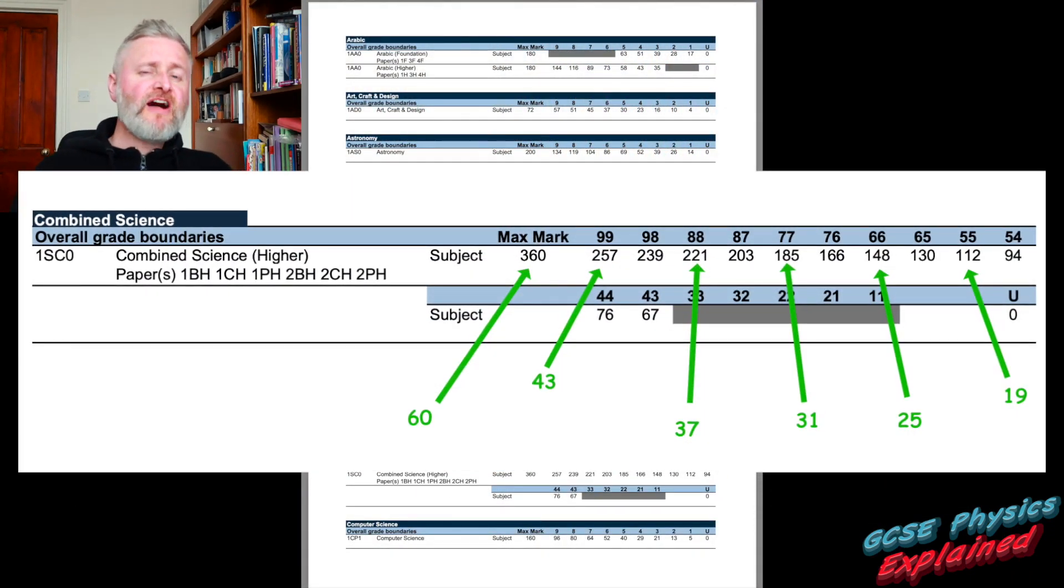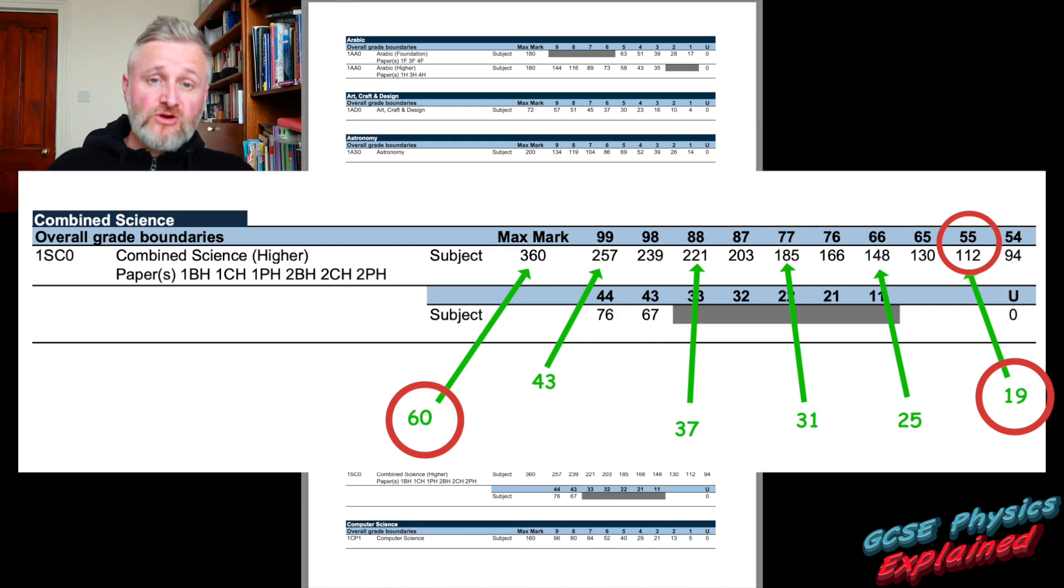On the combined science higher papers, you only need an average of about 19 marks per paper out of 60 to get a level 5, which you can actually get just from the calculations. Then every time you go up by six marks, you're going up an extra level. So roughly 25 marks is a level 6, which is very achievable, 31 marks is a level 7, 37 marks is level 8, and 43 marks is a level 9.